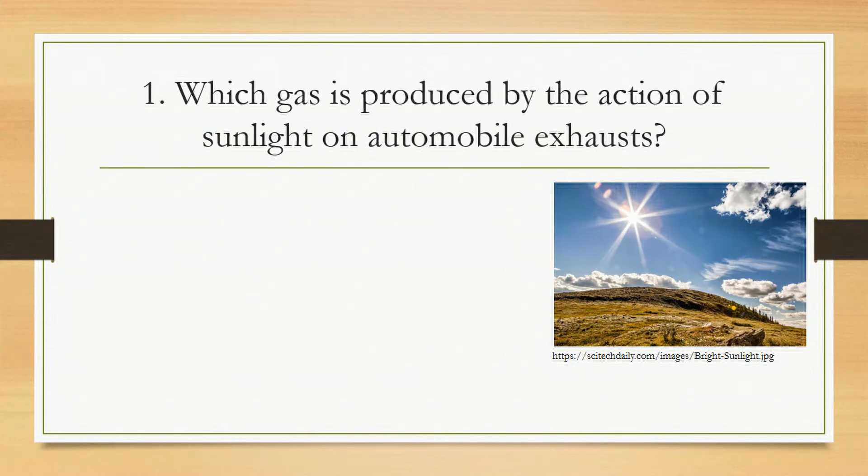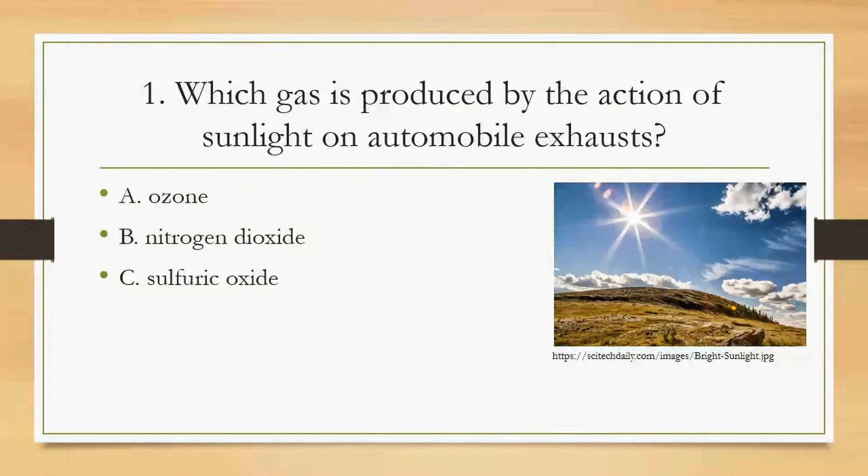Number 1. Which gas is produced by the action of sunlight on automobile exhausts? Letter A, Ozone. Letter B, Nitrogen dioxide. Letter C, Sulfuric oxide. Letter D, Oxygen.